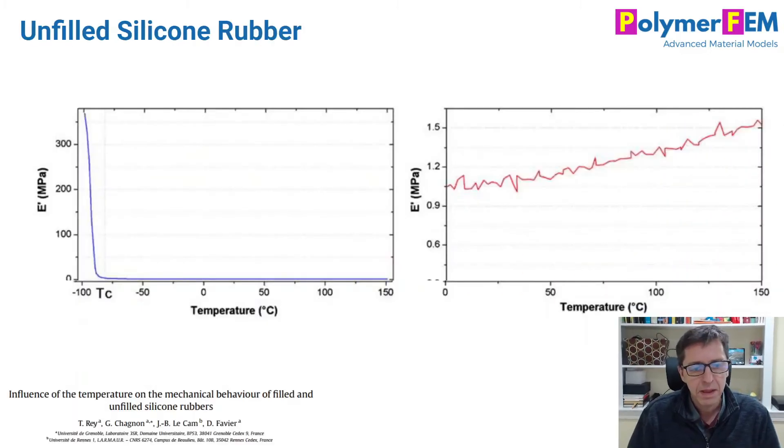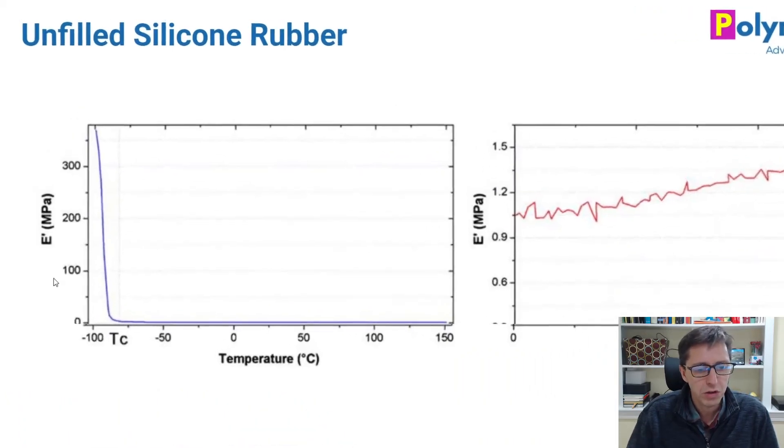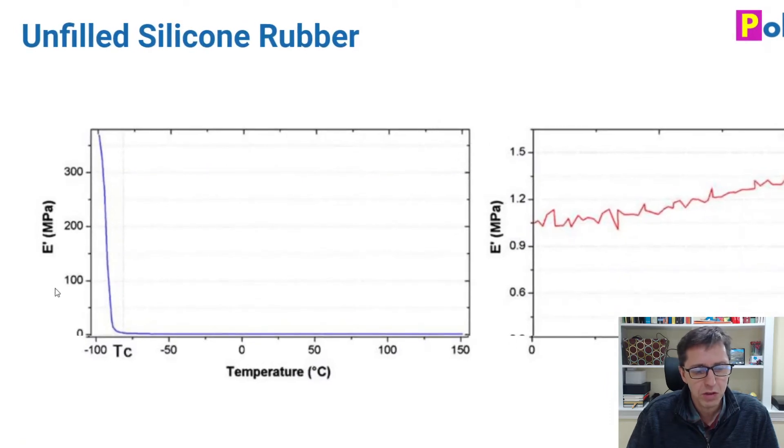But if we look at an unfilled silicone, so here's another material that behaves very differently here. So this is a modulus, it's actually the storage modulus, but the Young's modulus would be the same. It's a function of temperature and from very, very low temperature, we see that the Young's modulus is very large, 300 plus megapascals. It's a glassy material. So we are below the glass transition temperature here.